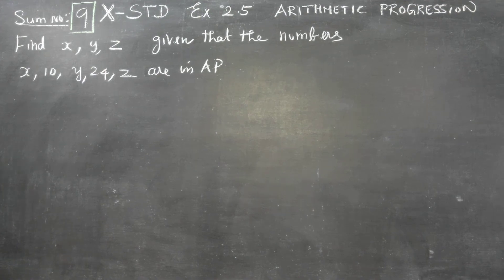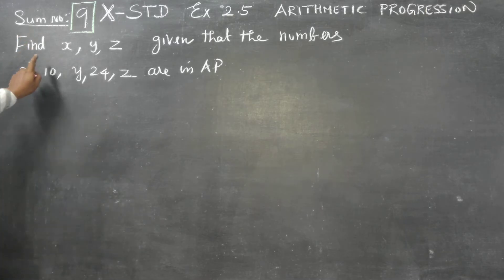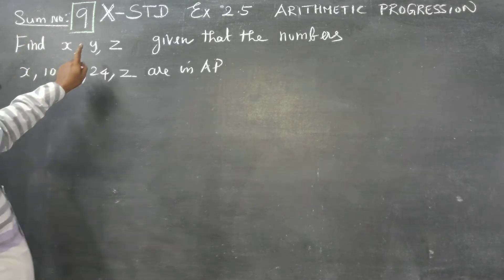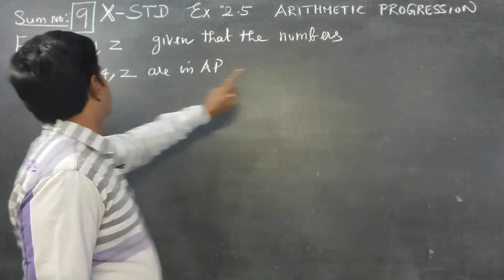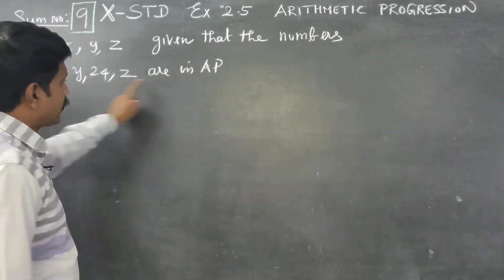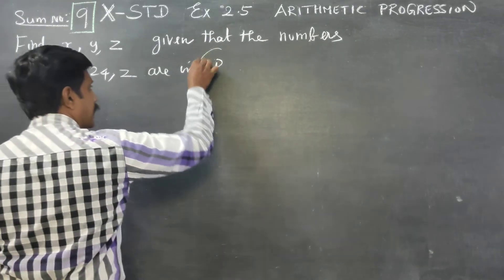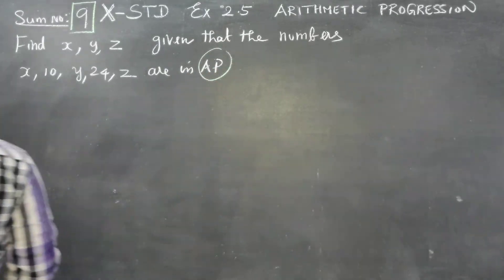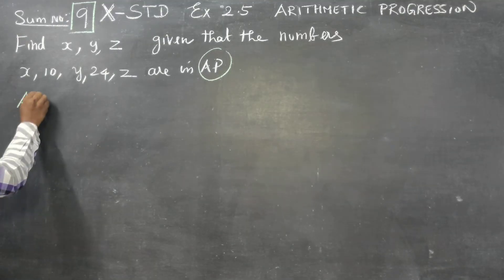Dear 10th standard students, in exercise number 2.5, sum number 9, find x, y, z given that the numbers are in AP — arithmetic progression.